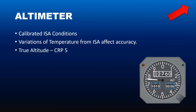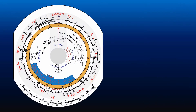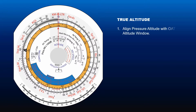To calculate true altitude using CRP5, we need pressure altitude, indicated altitude, and outside air temperature. To find the true altitude using CRP5, first align pressure altitude with outside air temperature in the altitude window.